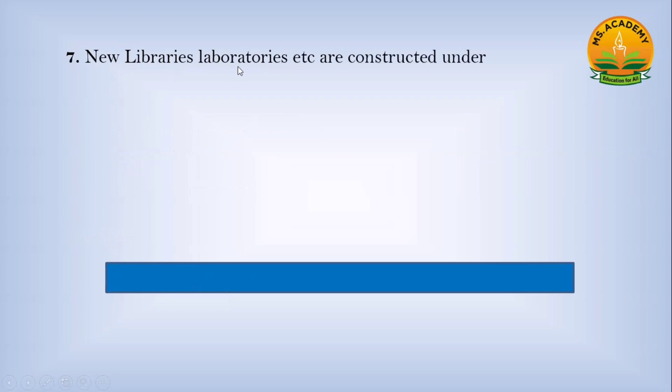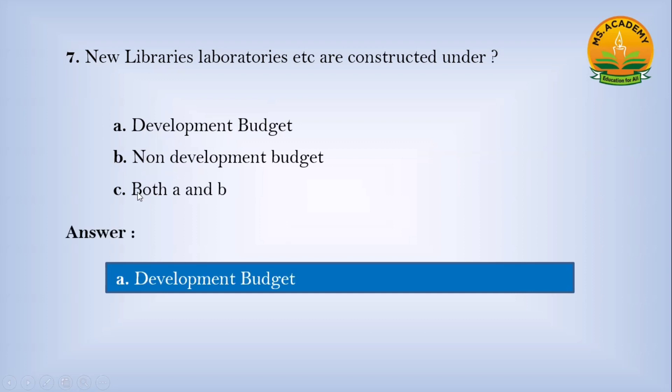New Libraries, Laboratories, etc. are constructed under: Option a) Development Budget, Option b) Non-Development Budget, Option c) Both a and b. Answer: a - Development Budget.